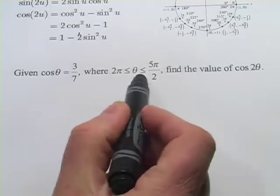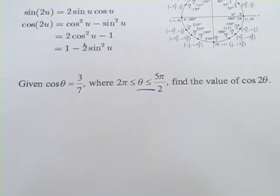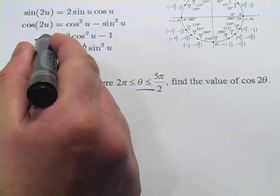Now they're giving us this information so that if we needed sine for one of these formulas we could determine whether it's positive or negative. But in this case, why don't we just use the one that doesn't require sine. Let's try this one.